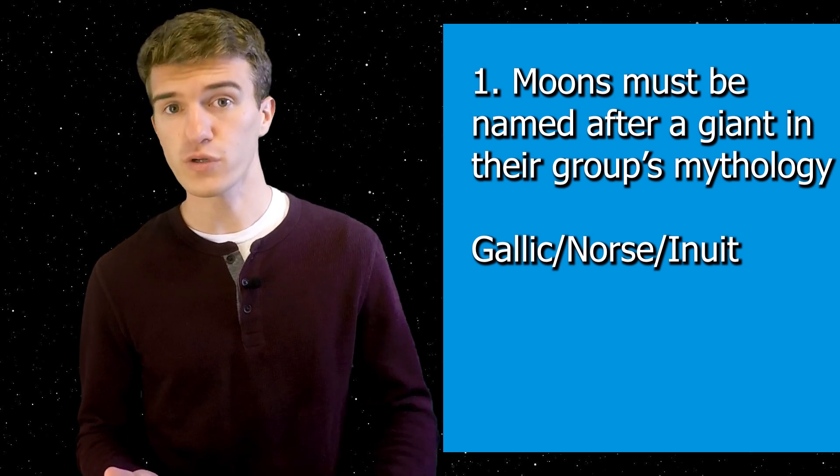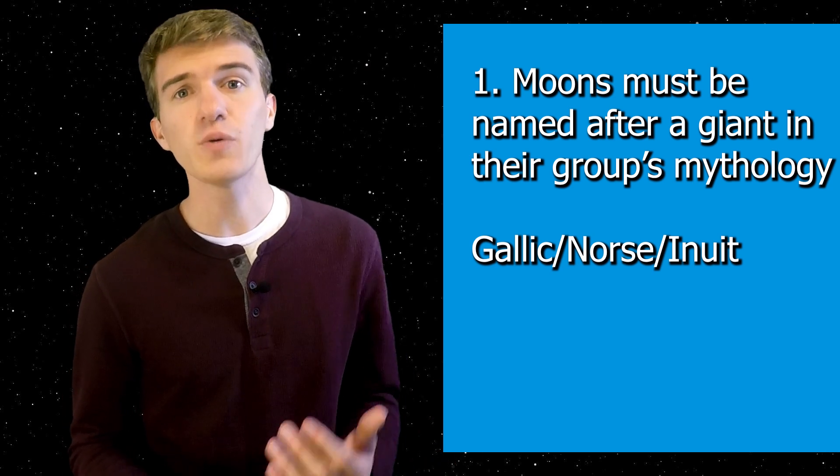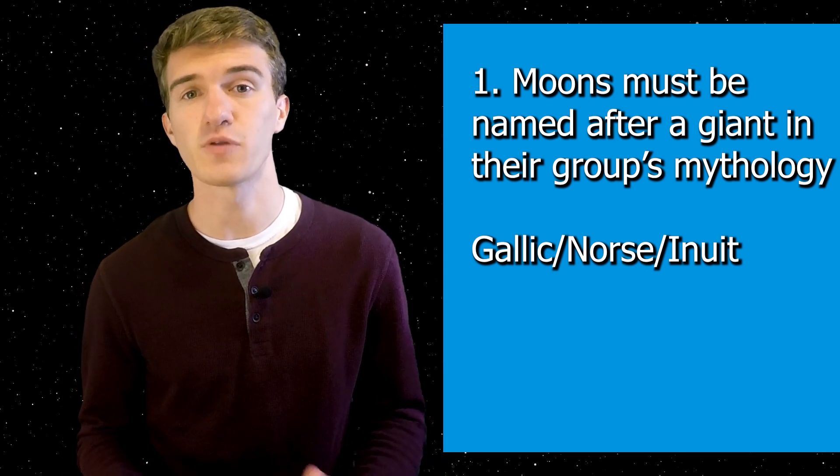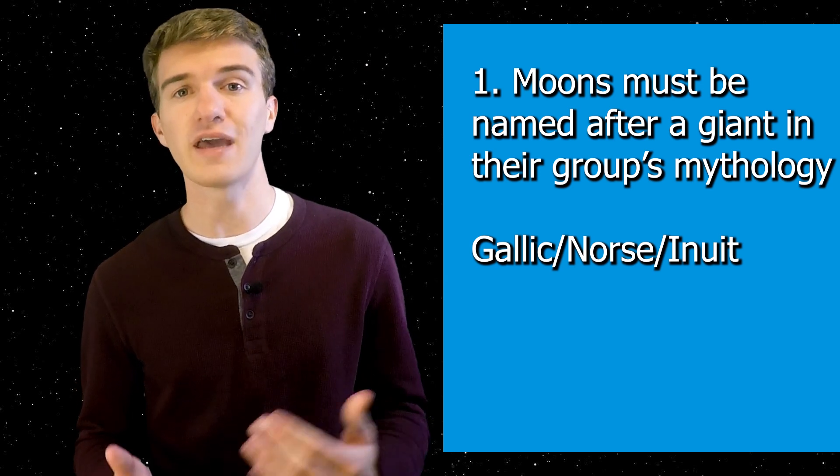For example, for the Norse group, or if you wanted to name a moon that is in the Norse group, you would have to give it a name that coincides with a giant in Norse mythology. And similarly for the Inuit and Gallic groups, you would have to name them after giants in the Inuit and Gallic mythologies. So first of all, you could do some research into the mythology and see what names might work rather well.